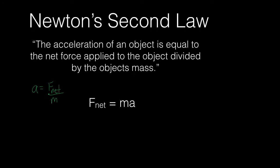In most physics textbooks, you're going to see this equation rearranged. If we multiply both sides by mass, you get this equation. So these two equations really are the same thing — they're just rearranged in different forms.